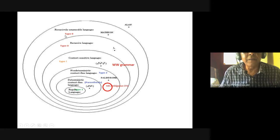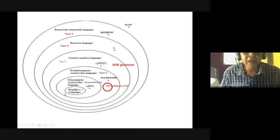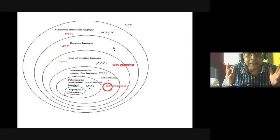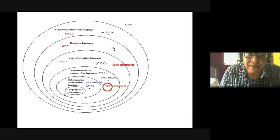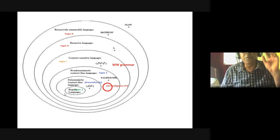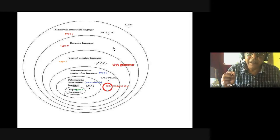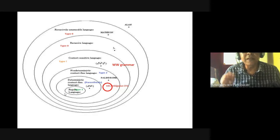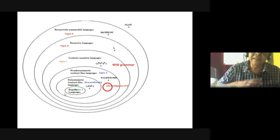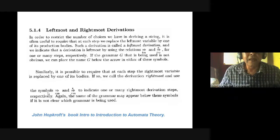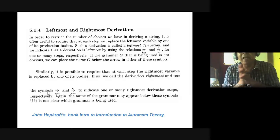These things I will cover later. Today our focus will be deterministic context-free language. Deterministic context-free language has a grammar. One form I covered in the last class is Chomsky's Normal Form. This is leftmost derivation and rightmost derivation — I took this from Hopcroft's book.